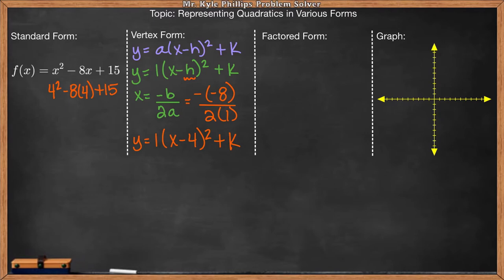So 4 squared, we know, is 16. 16 minus 32 is just going to be negative 16. And then plus 15 is going to give us negative 1. So k here is going to be negative 1. So if I express this in vertex form, I have y equals 1(x minus 4) squared minus 1.